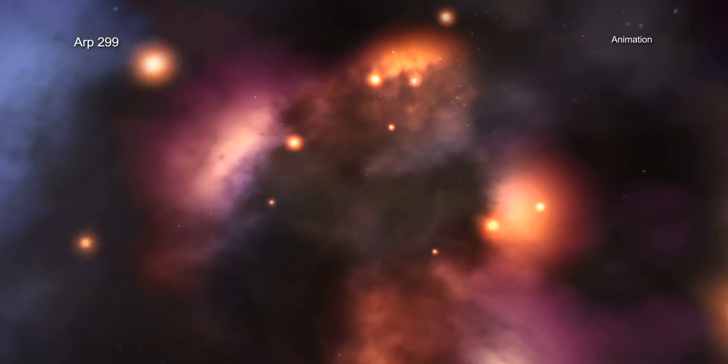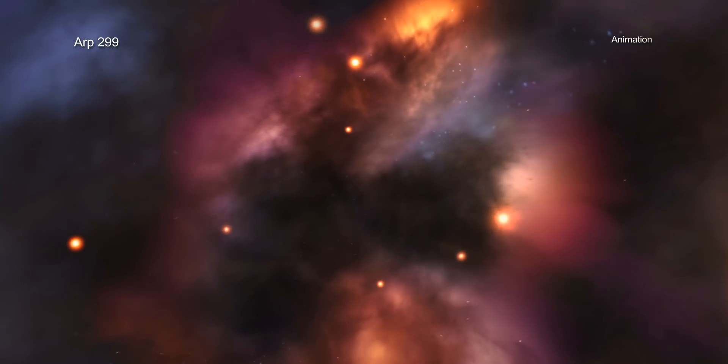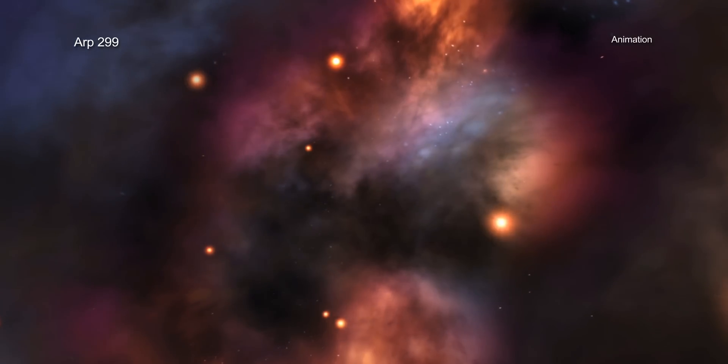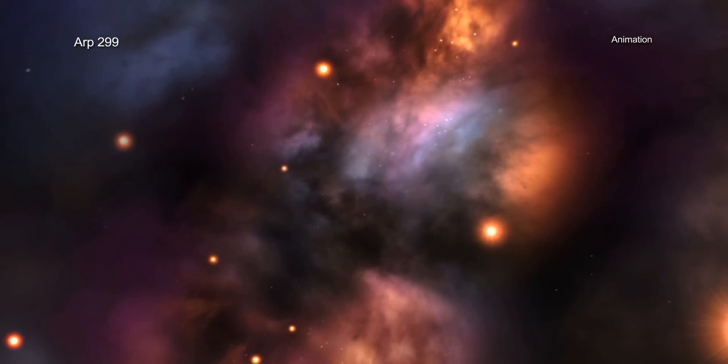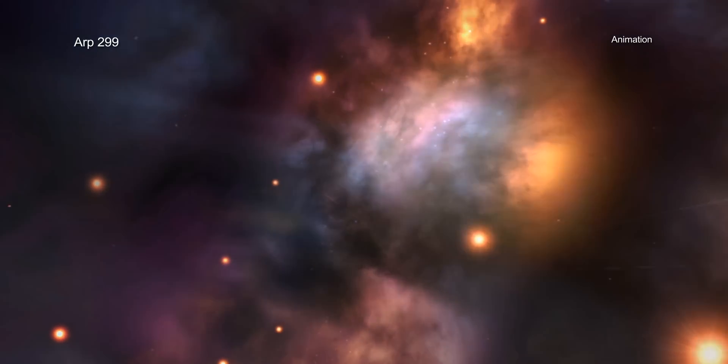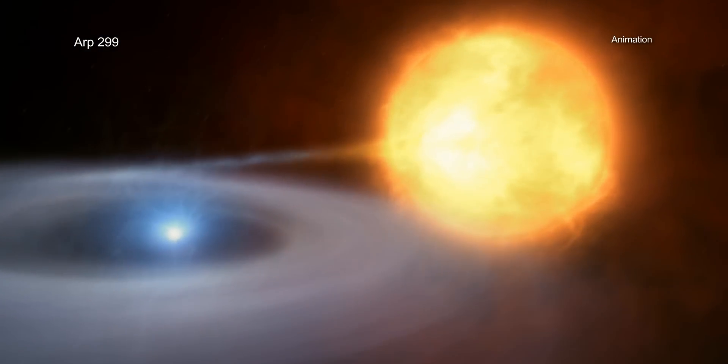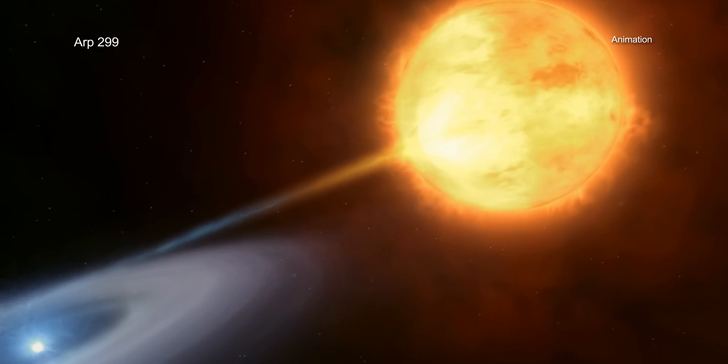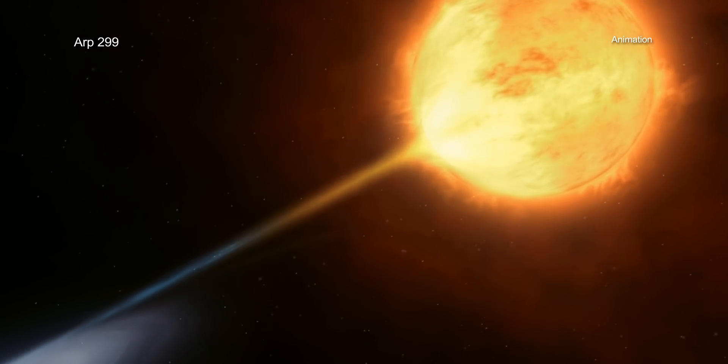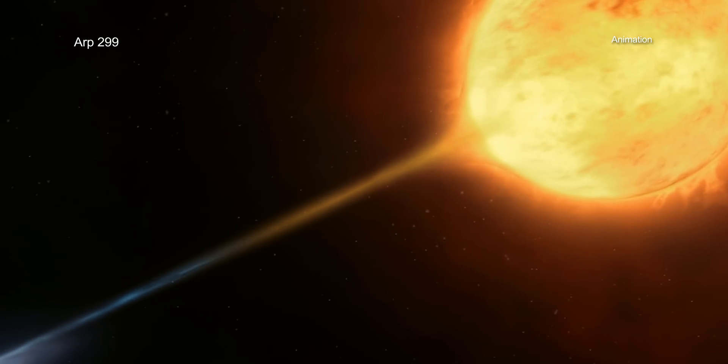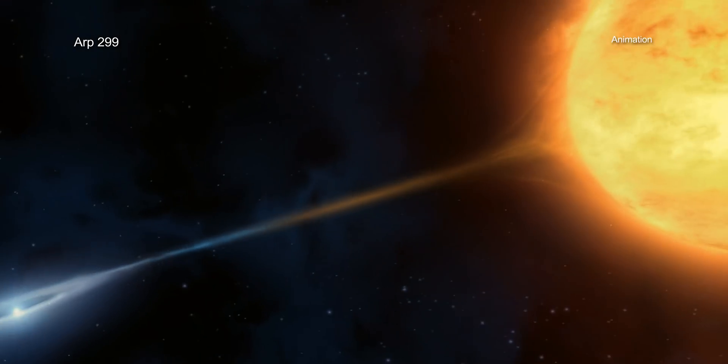These ULXs are found embedded in regions where stars are currently forming at a rapid rate. Most likely, the ULXs are binary systems where a neutron star or black hole is pulling matter away from a companion star that is much more massive than the Sun. These double star systems are called high-mass X-ray binaries.